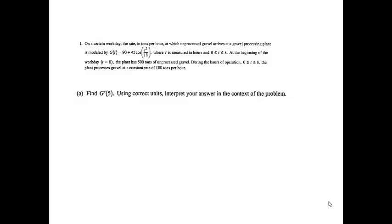Problem number one. On a certain workday, the rate in tons per hour at which unprocessed gravel arrives at a gravel processing plant is modeled by g of t equals 90 plus 45 cosine of t squared over 18, where t is measured in hours and t is between 0 and 8. At the beginning of the workday, t equals 0, the plant has 500 tons of unprocessed gravel. During the hours of operation between 0 and 8, the plant processes gravel at a constant rate of 100 tons per hour. So we have a gravel processing plant with some unprocessed gravel, more arriving throughout the day, and gravel being processed at 100 tons per hour.